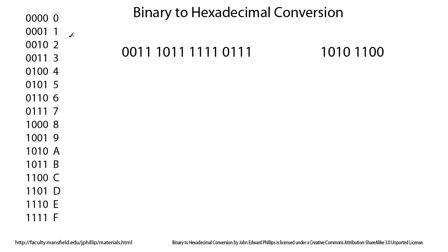Let's look at converting binary to hexadecimal. It's helpful to have a conversion table written out, and you can create this table very quickly. Start with all zeros — four zeros in binary — and count all the way up to 1111 in binary.